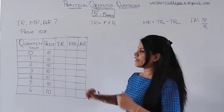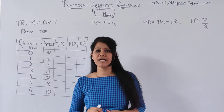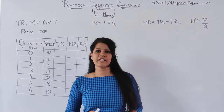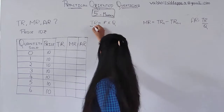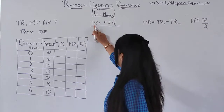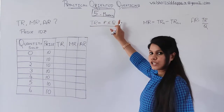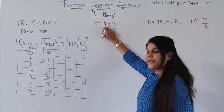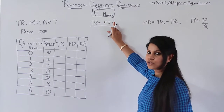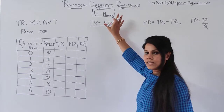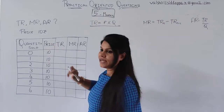How are you going to find out TR? To find out TR — your total revenue — you need a formula. The formula to find out TR is P into Q, where P is price and Q is quantity. This is the way you are going to find out TR.